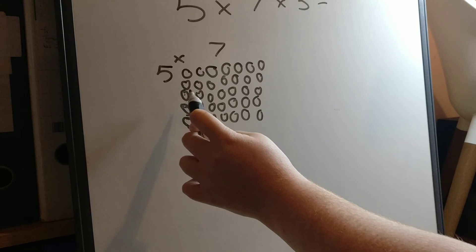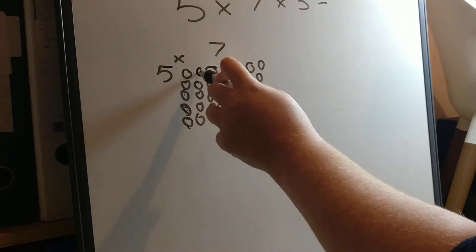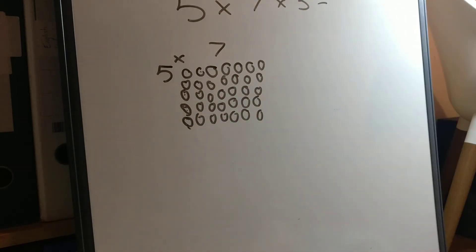And I'm just going to count my row and my column just to make sure I've got the right number. So it's one, two, three, four, five. Got the right number going down. One, two, three, four, five, six, seven. Got the right number going across.